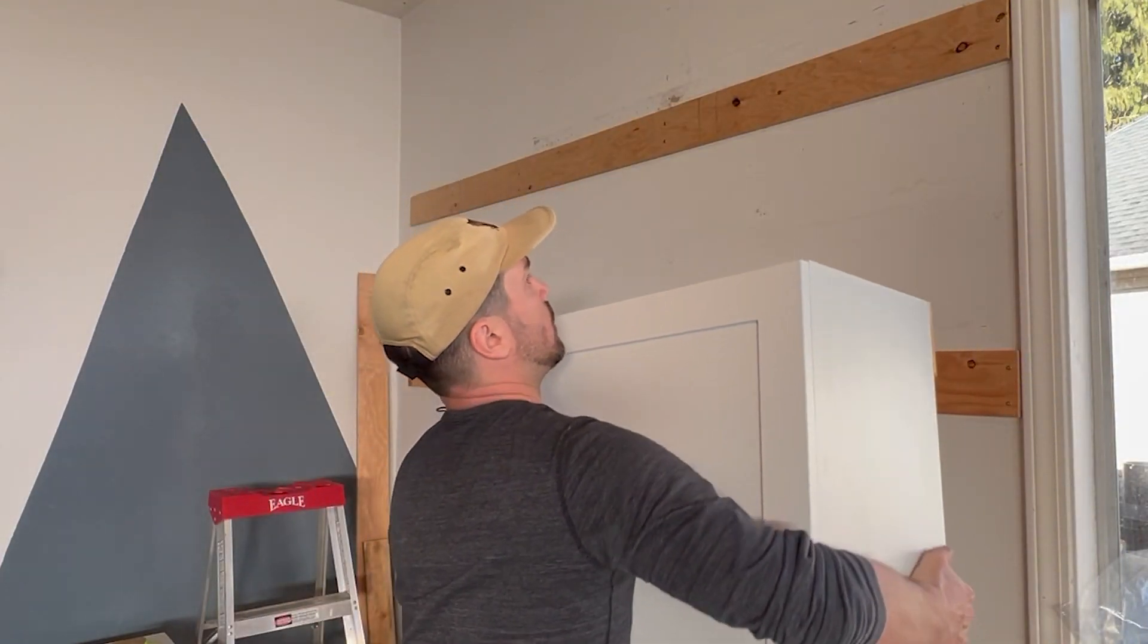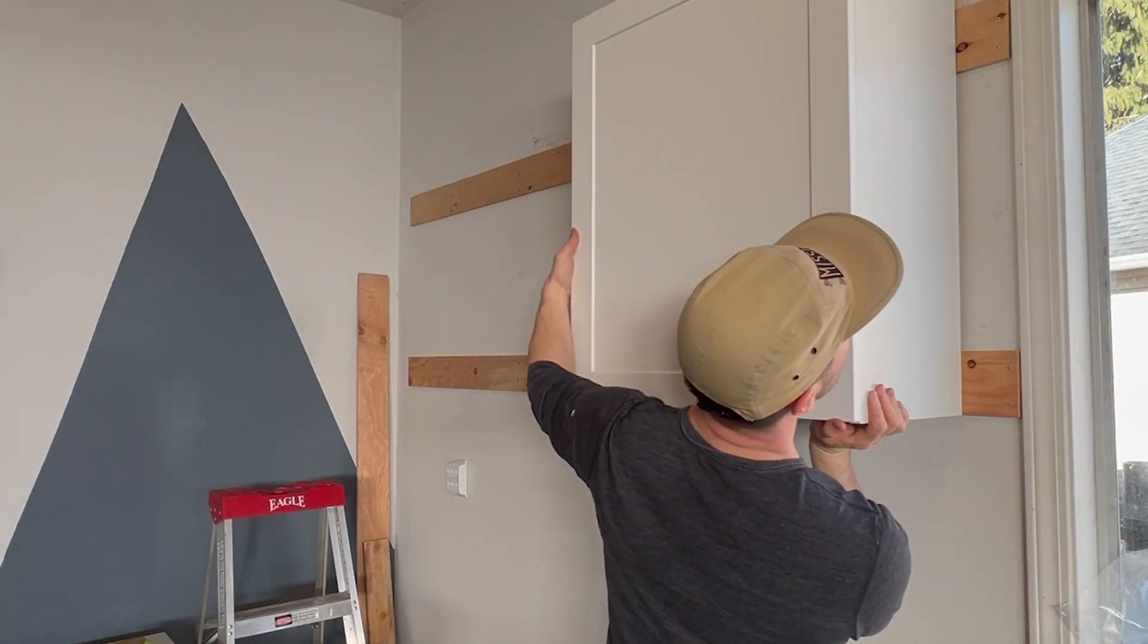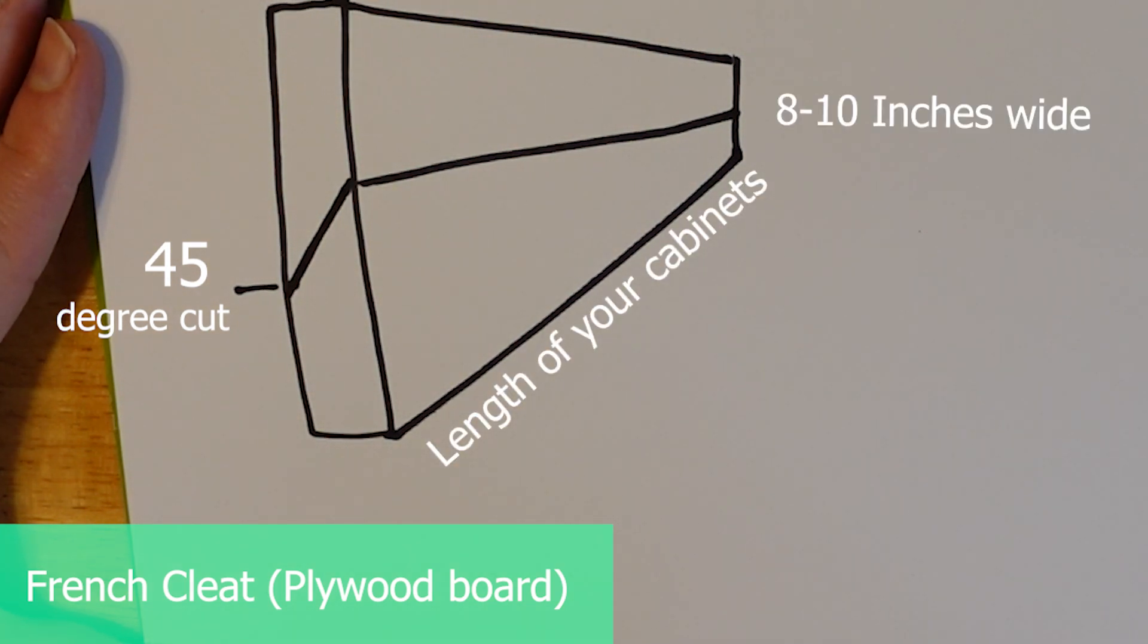My neighbor taught me the French cleat technique, which is a simple way to hang your cabinets up and put them in place nice and easy. French cleats consist of a long piece of plywood the length of your cabinets cut at a 45 degree angle.